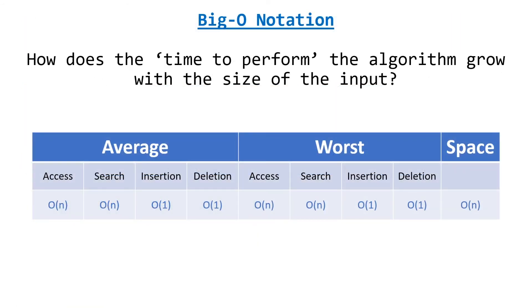Let's finish up with big O notation — the time to perform an algorithm as it grows with the size of the input, called time complexity. We'll also look at space complexity. We only care about average and worst case. For accessing and searching: accessing is the same as indexing. Because linked lists are not stored in contiguous memory, they can't be indexed. We still have to traverse the list through the pointers in memory to find the node we want, and the same goes for searching. So these are big O of N, or linear time, because the time is proportional to the size of the input.